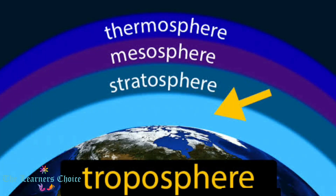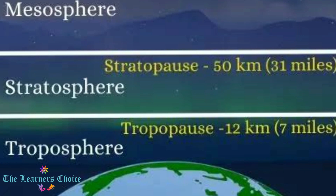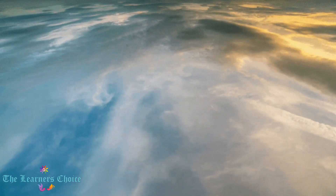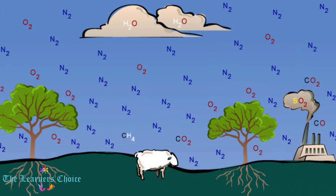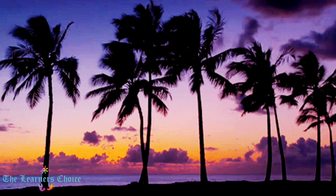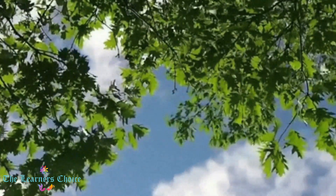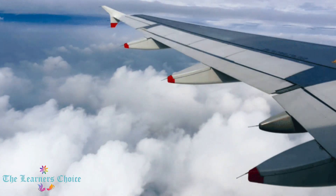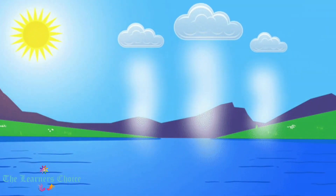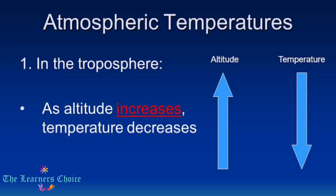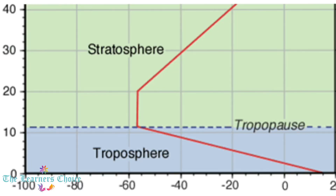The troposphere is the lowest layer in the Earth's atmosphere. It extends upward to about 12 km from the surface of the Earth. It is the densest layer and is filled with many different gases. The troposphere contains 75% of all air in the atmosphere. Most clouds appear in this layer because 99% of water vapour in the atmosphere is found here. The temperature in the troposphere also decreases with height. The top of this layer is referred to as the tropopause.